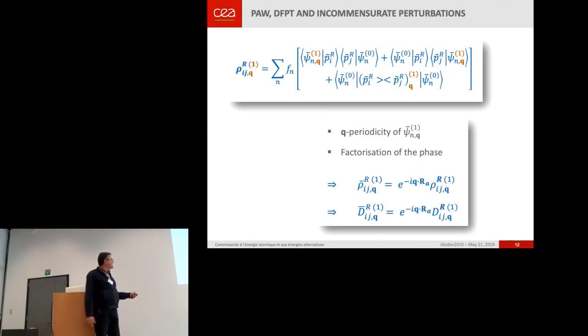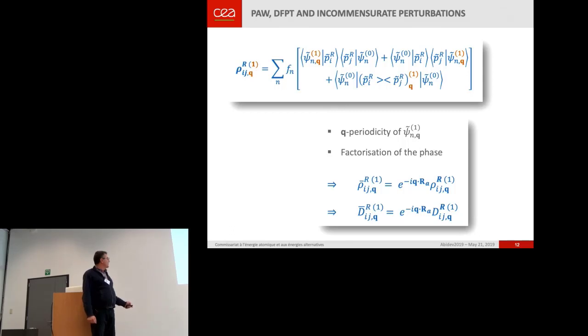And you can obtain some quantities for the PAW on-site scalars. And you see they have a phase. They contain a phase with the position of the atom. And so they are complex. And they have another symmetry.